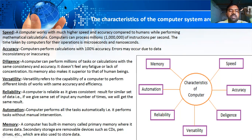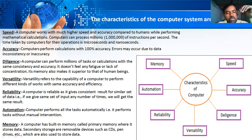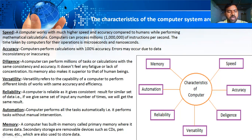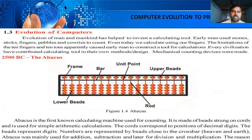Reliability means the computer gives consistent results for a similar set of data. Automation means the computer performs all tasks automatically without manual intervention. Memory includes primary storage such as RAM and ROM, and secondary storage such as CD, pen drive, hard disk, and external hard disk. These are all the characteristics of computers.